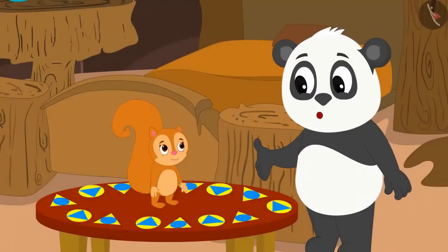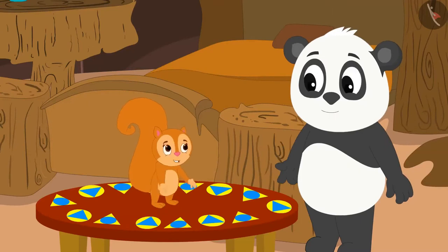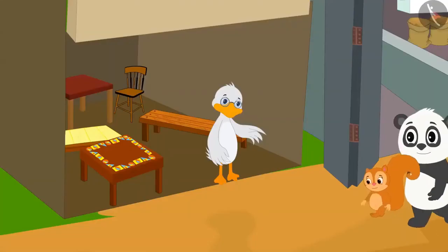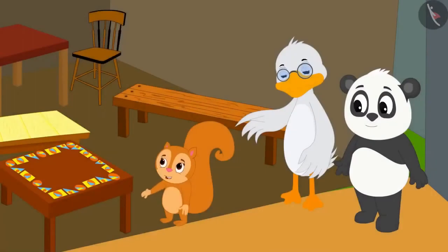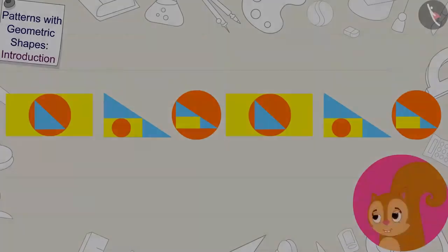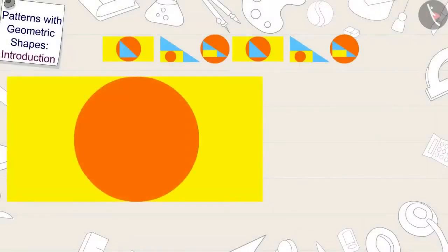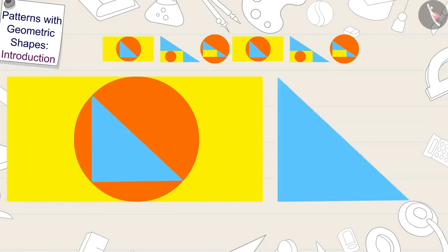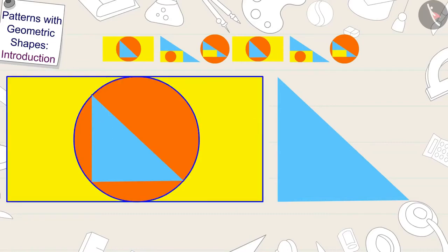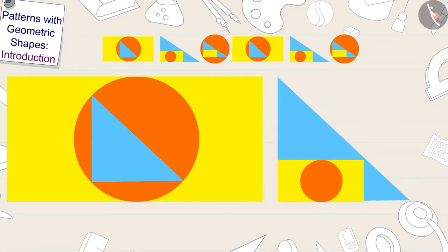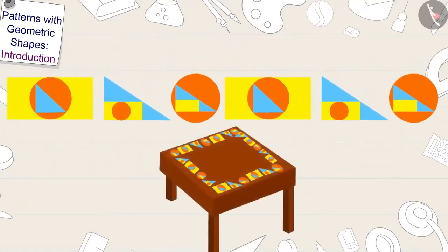Good, now I understand, Golu said to Chanda. Come on Golu, I also want to buy a beautiful pattern table for myself from Uncle's shop. Chanda liked this pattern table at Uncle's shop. Children, can you tell which rule Uncle has used to make this table pattern? To make this pattern, each time Uncle made the inside of the previous mark as the outermost of the next mark and then made the remaining two shapes inside in the order of the previous mark. By repeating this rule again and again, Uncle has patterned his table.